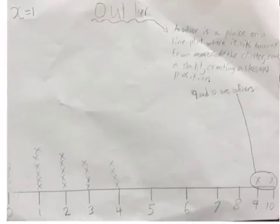An outlier is a place on a line plot where it sits far away, most of the time, from the cluster, creating a slant also known as a skewed position. As you can see in this picture, 9 and 10 are outliers.